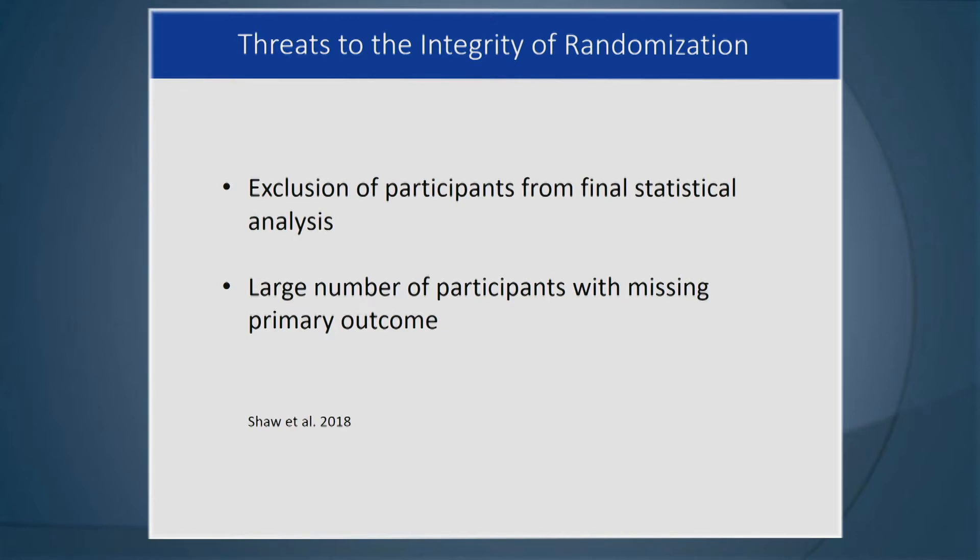The same idea applies if a large number of participants have missing primary outcome — it's a selection issue. This is particularly concerning because you don't know whether those who are missing data have anything to do with the treatment. So the whole balance of randomization and objectivity is basically compromised.